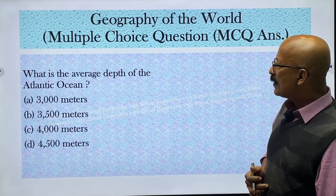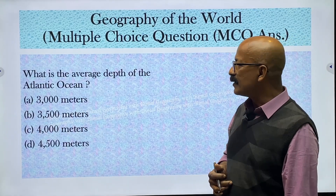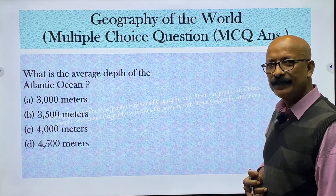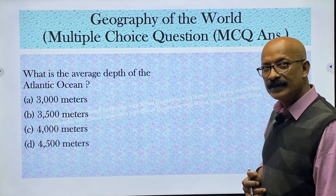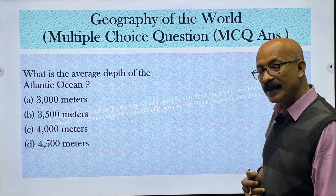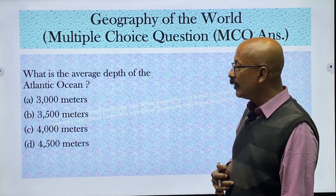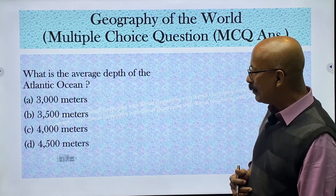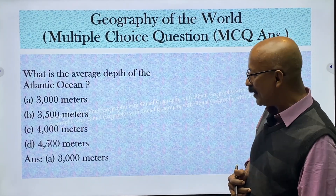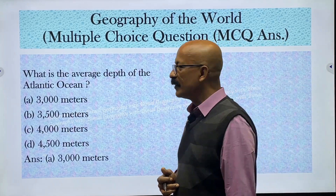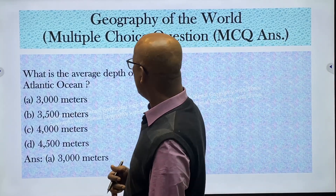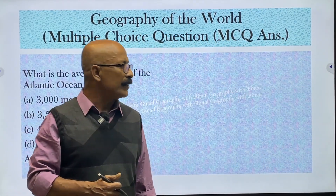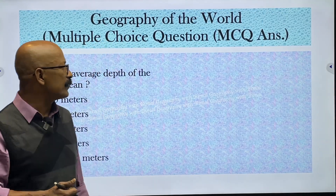What is the average depth of the Atlantic Ocean? The depth of the Atlantic Ocean is less than the Indian Ocean, which was 4,000 meters. So it will be less than that. The answer is 3,000 meters — the average depth of the Atlantic Ocean is 3,000 meters.